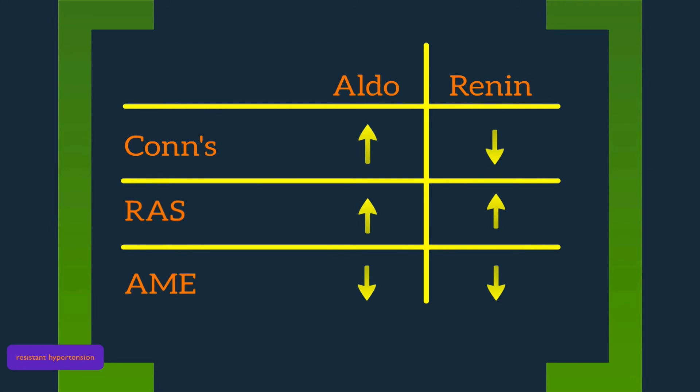In Conn's syndrome, an adenoma is producing aldosterone autonomously, which leads to the suppression of renin, hence the elevated aldosterone and low renin present. In renal arteriostenosis, the kidney is not receiving appropriate blood flow, and this leads to the release of aldosterone and renin, in which they're both increased.